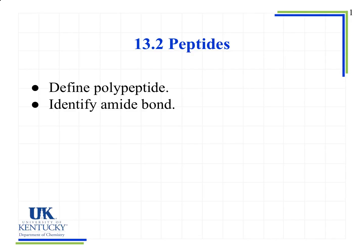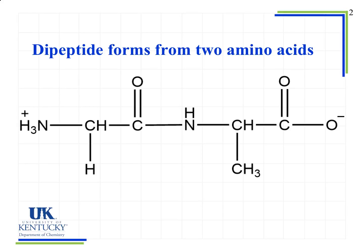In this lesson we are going to define polypeptides and we're also going to learn how to identify the amide bond, which is also known as a peptide bond. An amino acid is also known as a peptide, so when we have a dipeptide that means we have two amino acids. We want to look at the structure of this dipeptide and see the things that we notice.